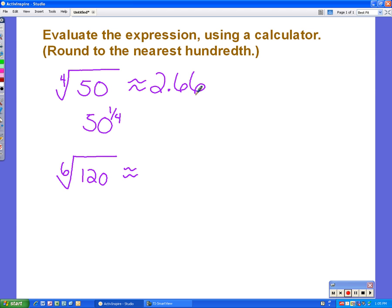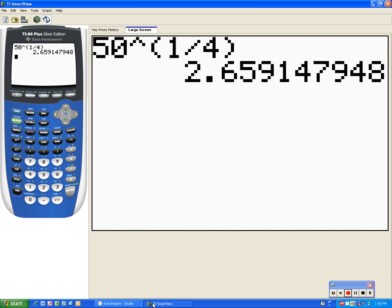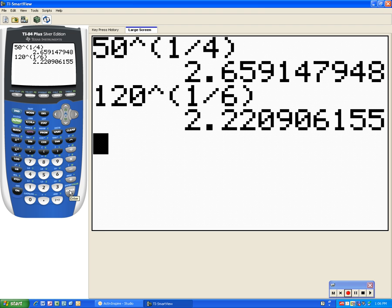The other one, again we want to change this to a fractional exponent. So we have 120 to the one-sixth power, and that's what we want to type in. Go back to your calculator, type in 120 to the one-sixth power, enter.